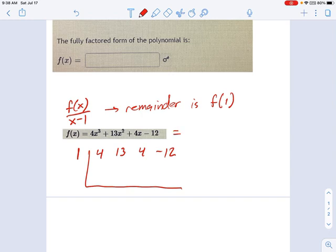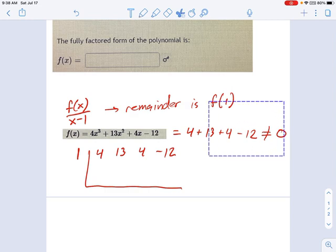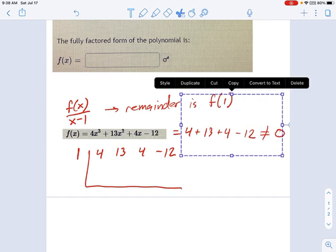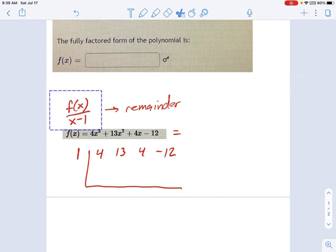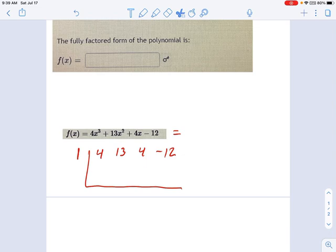Well, 1 cubed is just 1. 1 squared is just 1. This should be pretty quick. Does 4 plus 13 plus 4 minus 12 equal 0? And I don't even have to do the math. I just know it's not equal to 0 because there's a lot of numbers over there that are bigger than 12. So it turns out we have a shortcut. We can sometimes use the remainder theorem to get out of checking all these numbers if you can just quickly plug it in and say, oh, well, that's definitely not going to be equal to 0.